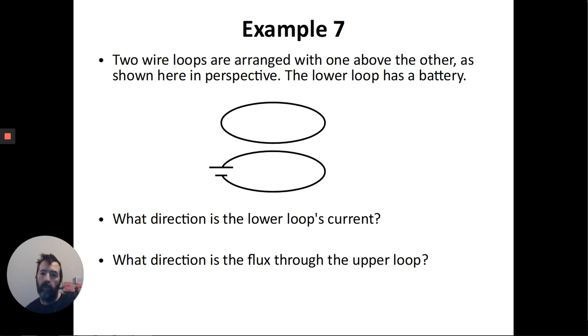Number seven, two wire loops are arranged with one above the other. You're looking at them slightly in perspective. I'm going to use this plate. I happen to have a pizza plate right next to me. So rather than seeing the entire circle of it, you're sort of looking at them both edge on. So you're slightly above them and looking down. So like the bottom edge is the closer edge. The upper edge is the further one. What is the direction of the current in the lower loop? The lower loop has this battery. So you've got to think back a little ways. What the heck does the battery symbol mean? Which side is which?